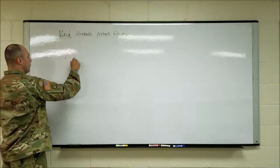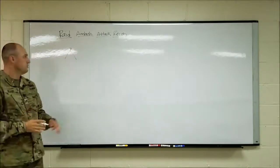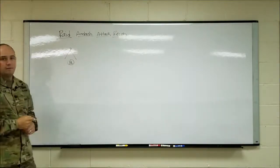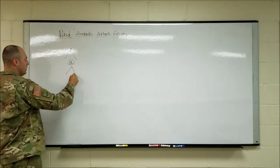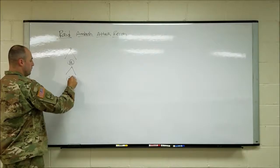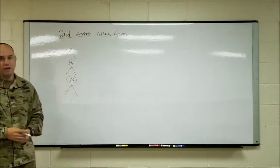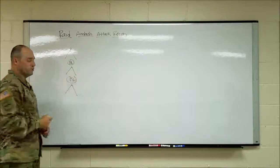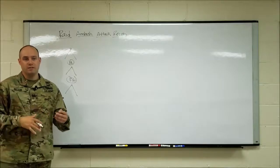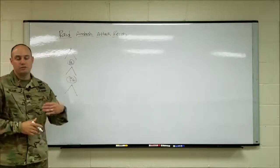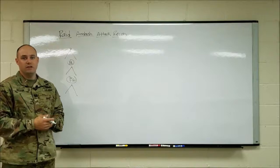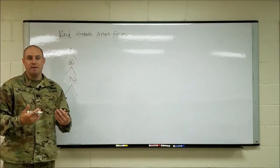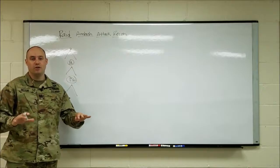In the platoon column, we have the first squad in order of march with the point man moving first. Behind him is the PL. Behind the PL is the second squad, followed by the platoon sergeant, and then followed by our third and final squad. This is straight out of ATP 3-21.8. The PL and platoon sergeant can move anywhere in the formation they deem necessary. The PL is responsible for moving the platoon to the first location and maintaining contact with higher the whole time. The platoon sergeant is ensuring accountability is kept at all times and controlling the formation.